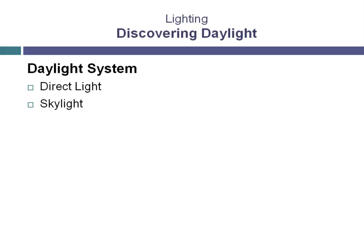Another component that isn't part of the light directly is a positioning control for the sunlight. This is the compass. This object allows us to determine the position of the sun based on the time of day, the date, and the location on Earth.